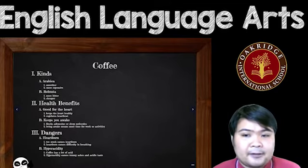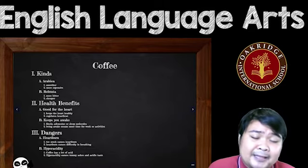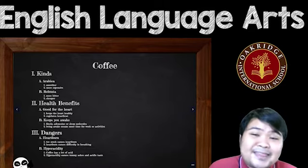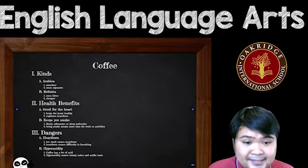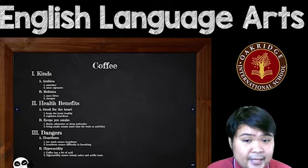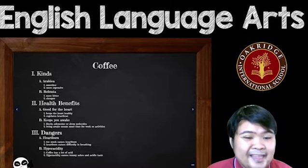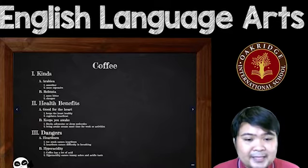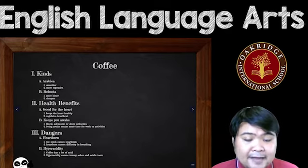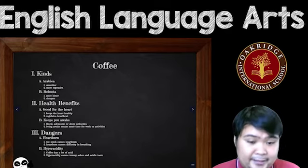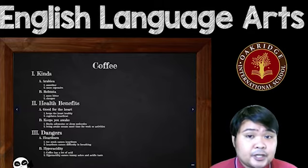Here I have an example of a topic outline — this one is about coffee. My three main headings are: the kinds, the health benefits, and the dangers. For kinds, I have Arabica and Robusta as subheadings. For health benefits, I have 'good for the heart' and 'keeps you awake.' For dangers, I have heartburn and hyperacidity. These are your subheadings — they should be related to your headings.